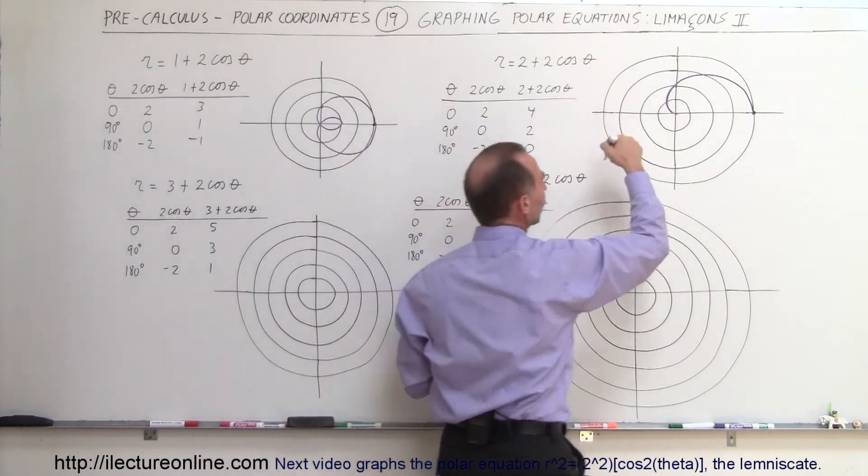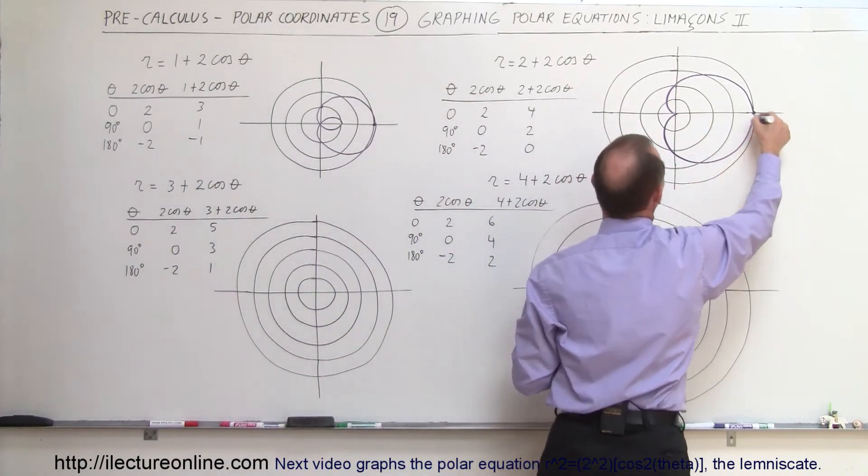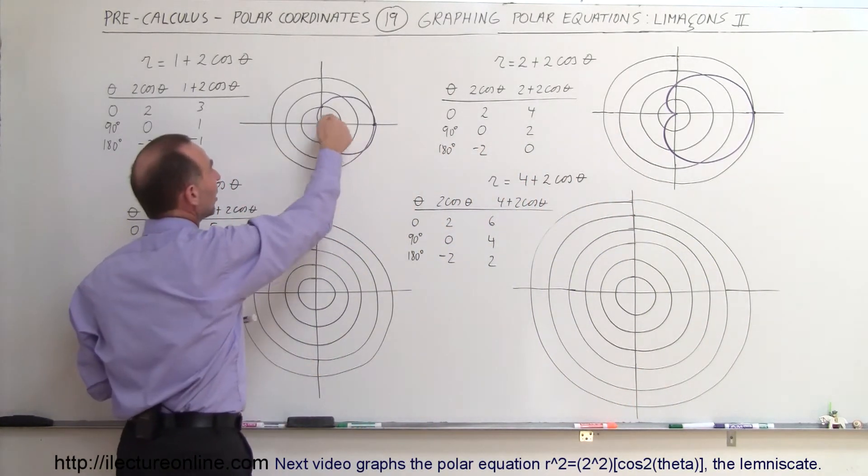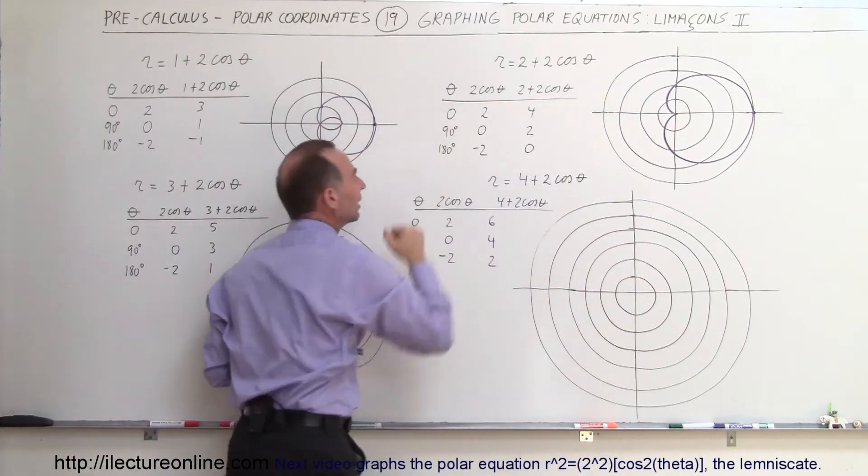It kind of makes a heart shape, and then on the symmetry it comes back out like this and completes the circle like that. So notice it looks a little bit more like a heart shape. You don't have this little circle inside, it stops at 0, it doesn't go negative at 180 degrees.